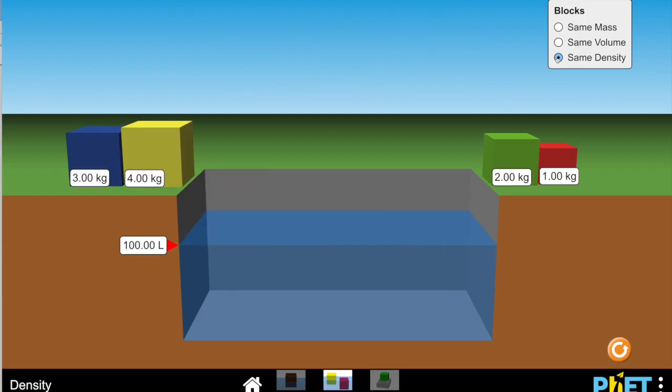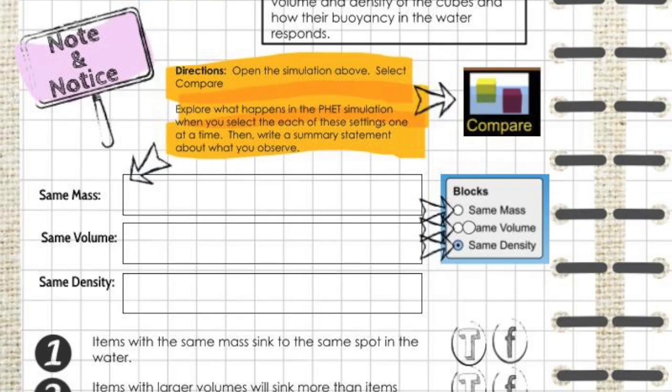The next section of the PhET simulator that we're going to explore is the same density. So click on this button to change the items to all have the same density. You can see that their mass is different and the volume of each cube is different. But what happens when you place each one in the water? Do your exploration and then return to your notebook and write a note and notice statement.